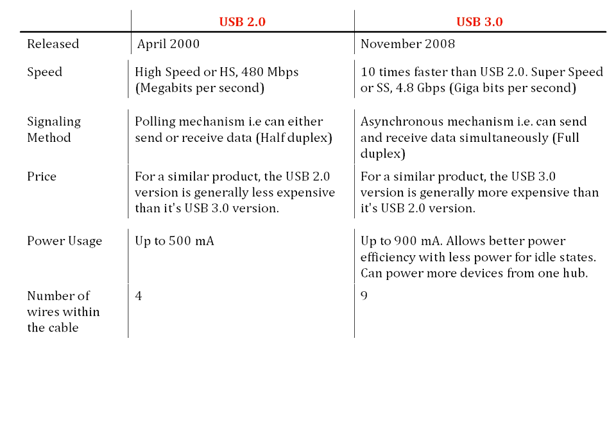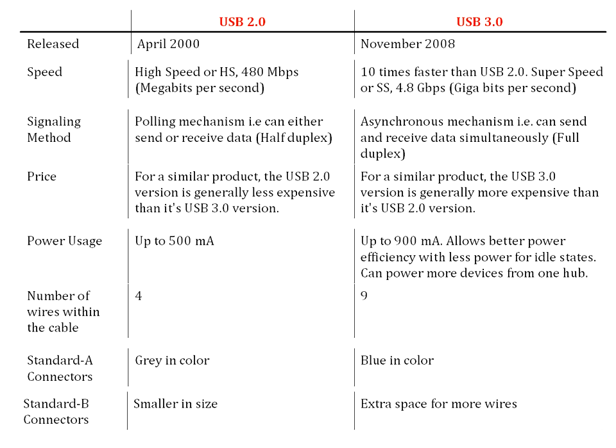USB 2.0 cables have four wires while USB 3.0 cables have nine. For standard Type-A connectors, USB 2.0 is gray in color while USB 3.0 is blue. For standard Type-B connectors, USB 2.0 is smaller in size while USB 3.0 has extra space to accommodate more wires.